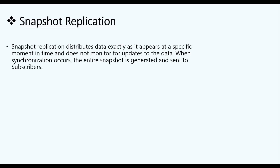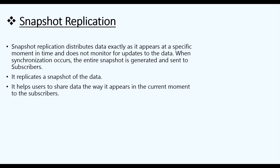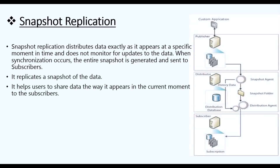Snapshot Replication distributes data exactly as it appears at a specific moment in time and does not wait for updates to the data. It just replicates the snapshot — so whatever the state of your database tables, your articles, or your publication, that entire snapshot will be taken and shared with the subscriber. Publisher will be your source and Subscriber will be your target, and we replicate data from Publisher to Subscriber via Distributor.